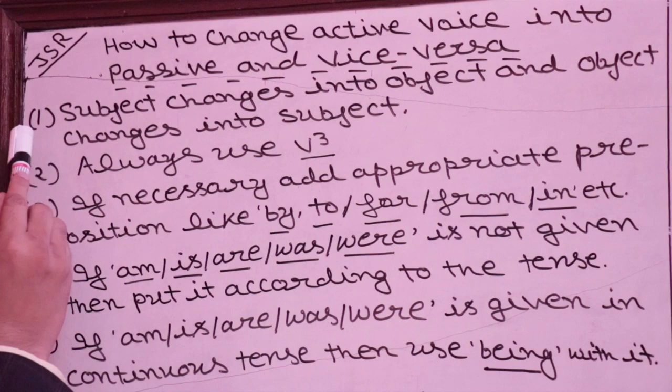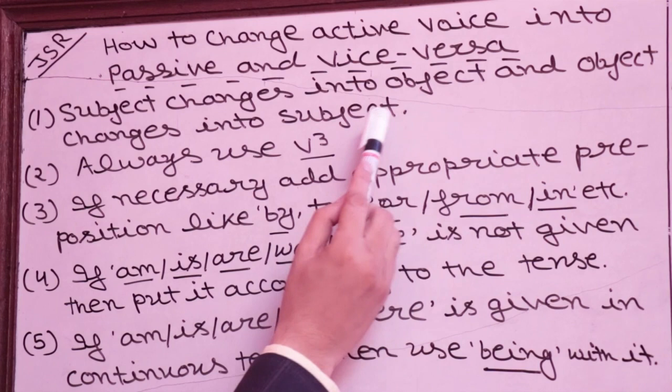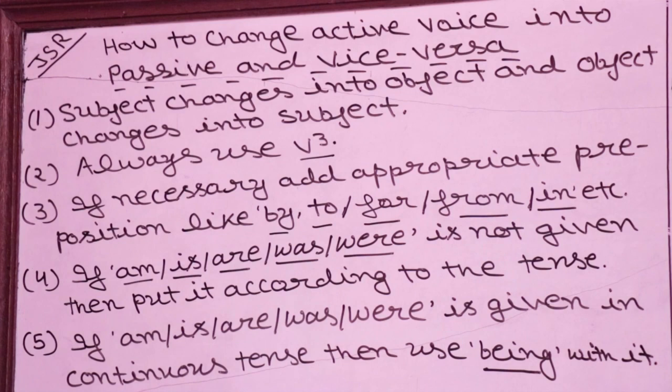First rule: Subject changes into object and object changes into subject. Second rule: Always use the third form of the verb in passive voice.